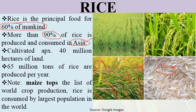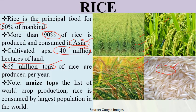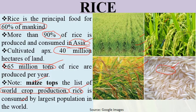Rice is cultivated on approximately 40 million hectares of land. About 65 million tons of rice are produced per year. Regarding world crop production rankings, maize tops the list of world crop production, while rice is the cereal consumed by the largest population in the world. So production-wise rice is second to maize, but consumption-wise rice leads globally.